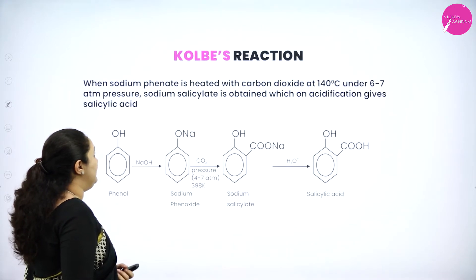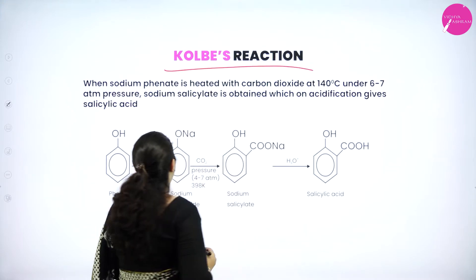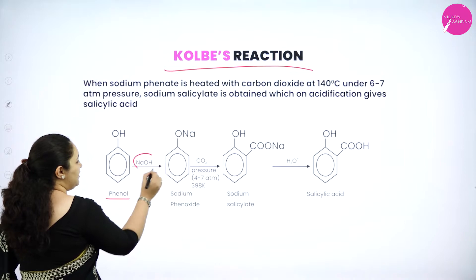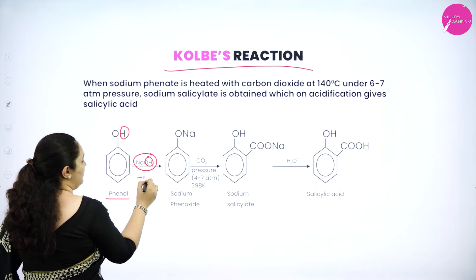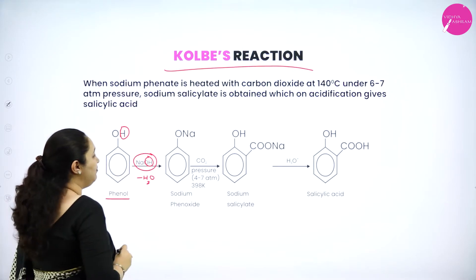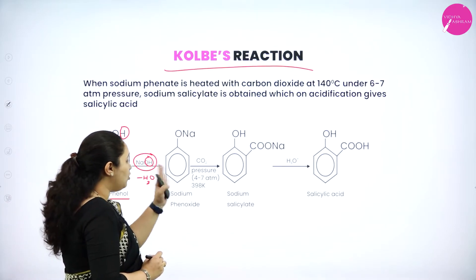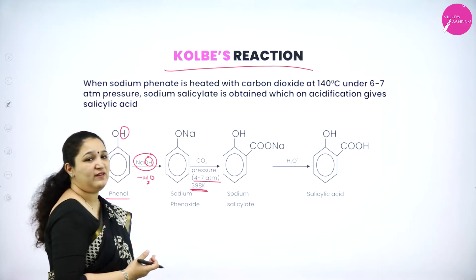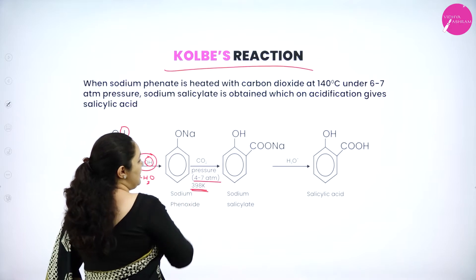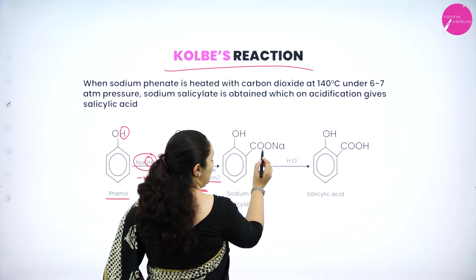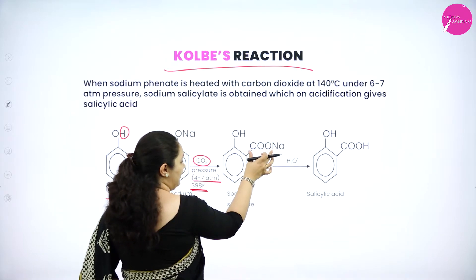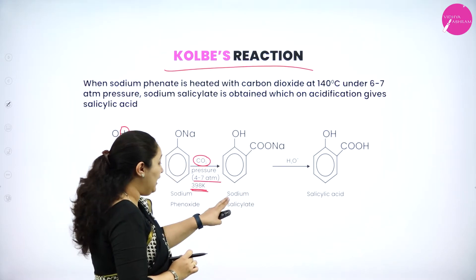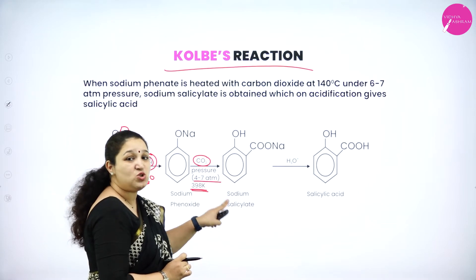Next is the Kolbe-Schmitt reaction. In this reaction, phenol is first treated with sodium hydroxide — the H from the OH is removed as H2O and sodium comes in to form sodium phenoxide. Further, sodium phenoxide is treated with carbon dioxide at 140°C (398 Kelvin) and 4 to 7 atmospheres pressure. Carbon dioxide comes in the ortho position as COONa — actually COOH is there, but sodium substitutes the hydrogen atom, and the hydrogen goes to the OH group — and sodium salicylate is formed.